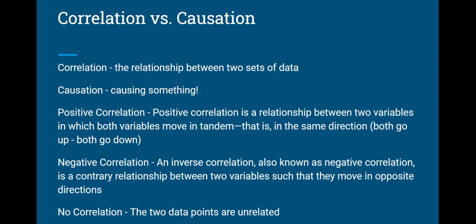What we do with those two types is oftentimes make correlations between the data and talk about causations. Correlations are when we have a relationship between two sets of data. Causation is when we're implying that one thing is causing the other. We're probably not going to talk too much about causation because it's very hard to prove that something in the data is specifically responsible for causing something else to happen. But correlations we'll talk about a lot.